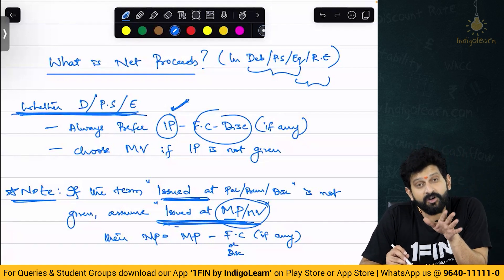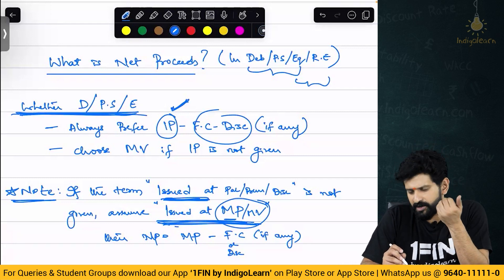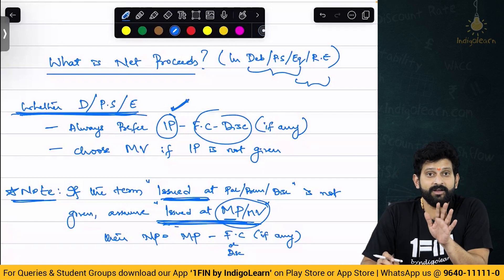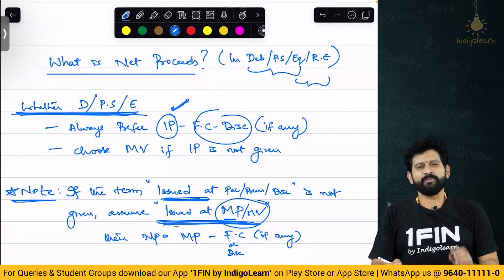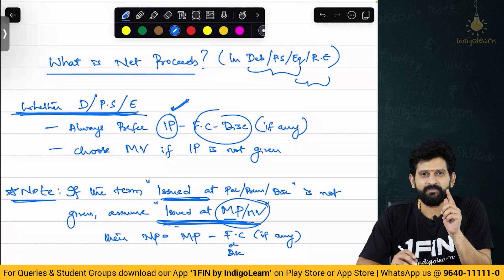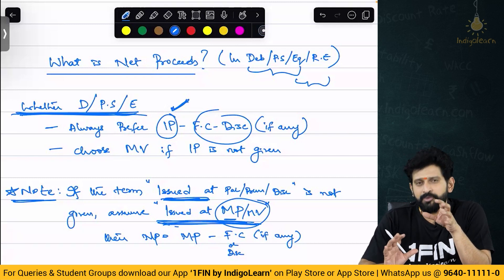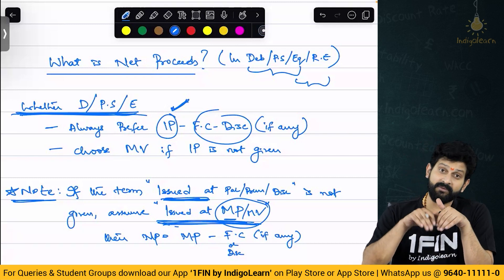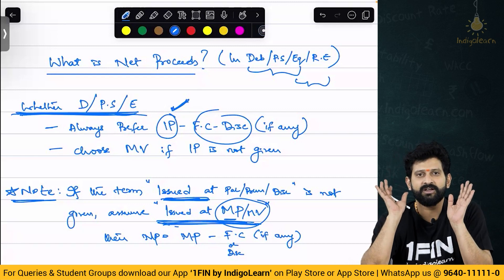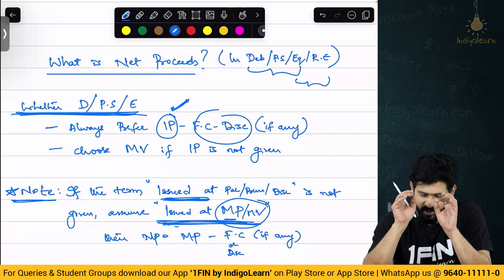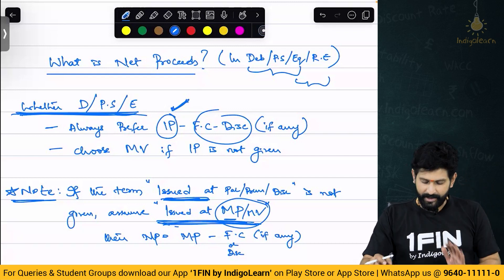Equity — don't ask whether they are redeemable or not. Equity is always irredeemable. In earlier days there was a proposition which used to say: for irredeemable, prefer market values; for redeemable, prefer book values. Now all that is removed. Now only issue price. Focus on issue price, issue price, issue price. Clear?